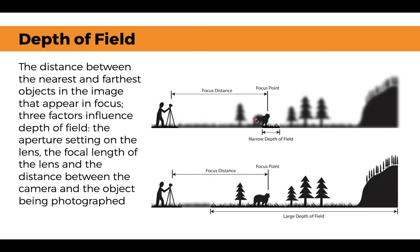Let's start with depth of field. Depth of field is basically the nearest and furthest objects in the image that appear in focus. There are three factors that influence the depth of field: your aperture, the focal length of your lens, and the distance between the camera and your focal point.